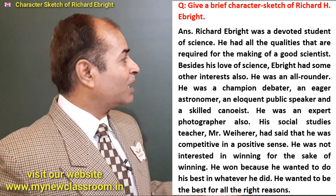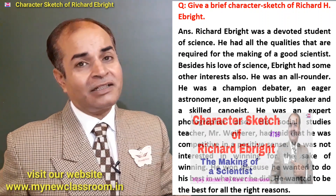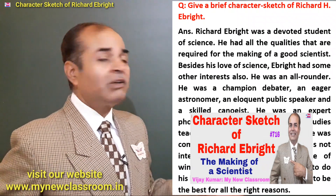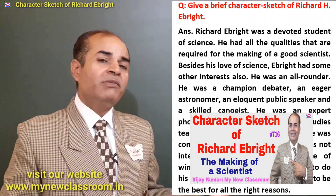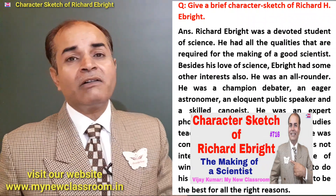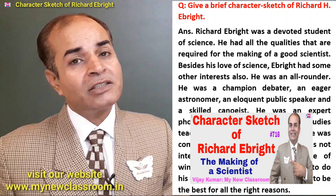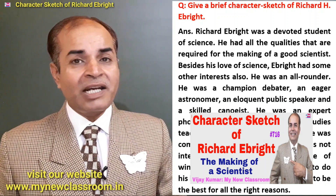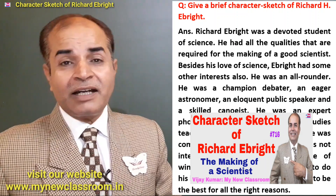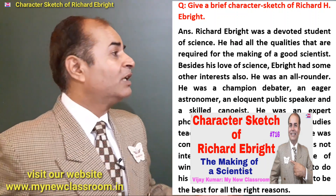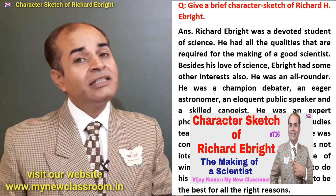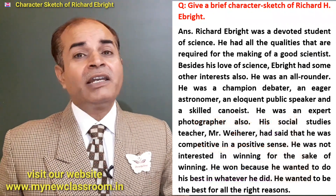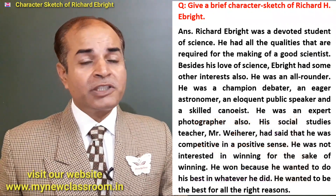So you can see — this is the character sketch of Richard H. Ebright that you need to write. It carries five marks and should be around 120 words. This video should give you enough to write a complete character sketch of how Richard H. Ebright became a great scientist.